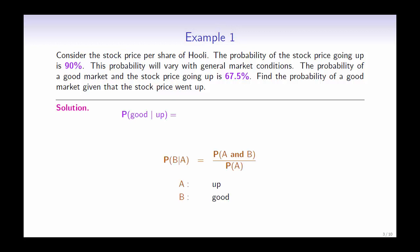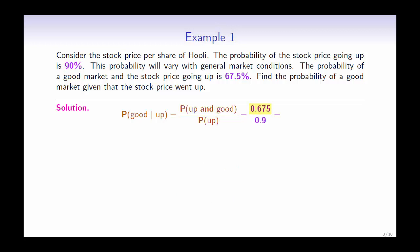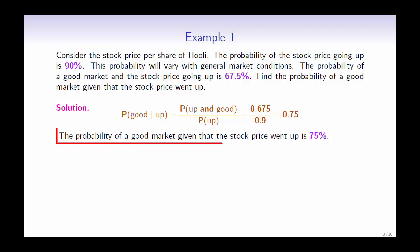We will use the formula that we just discussed. The probability of a good market and the stock price going up is 67.5%, and the probability of the stock price going up is 90%. So we have 0.675 divided by 0.9. Therefore, the probability of a good market given that the stock price went up is 75%.